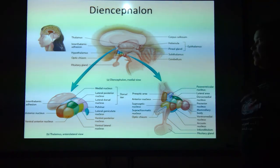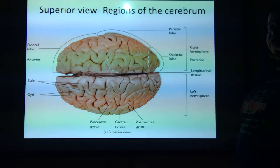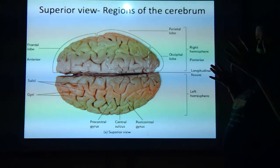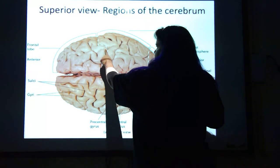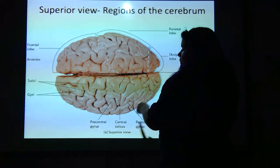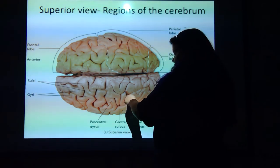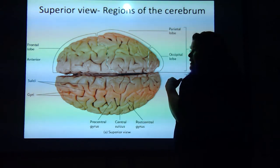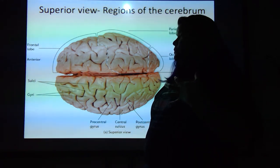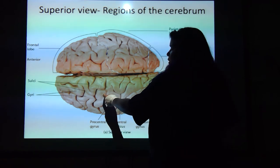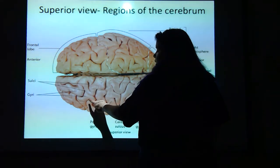Looking at the cerebrum: there's a fold that divides the brain — that's the central sulcus. Right in front of it is the precentral gyrus; right behind it is the postcentral gyrus. These actually carry sensory information for one of them, and the other carries motor information for voluntary movements. The sulci are the actual grooves; the gyri are the upraised folded portions.